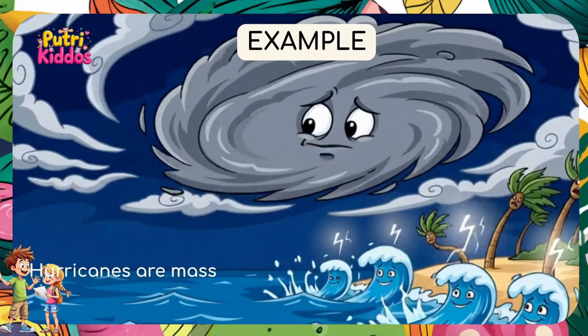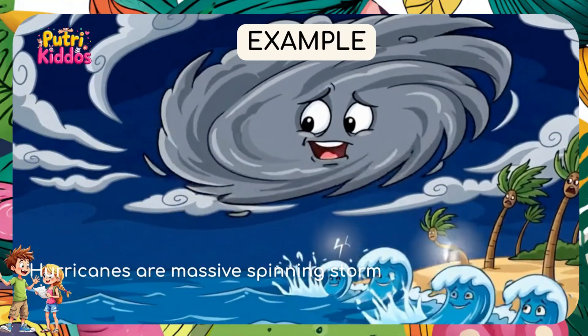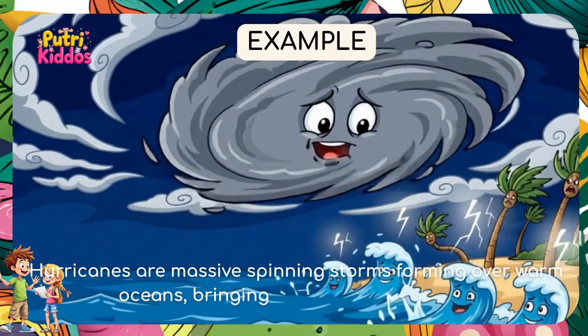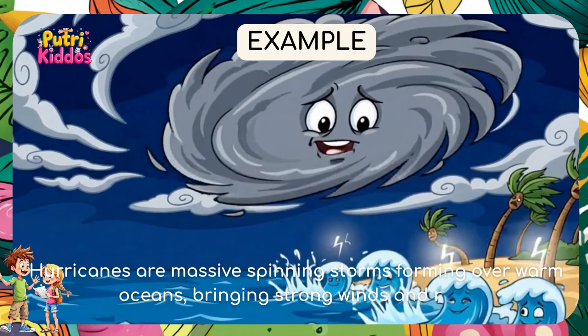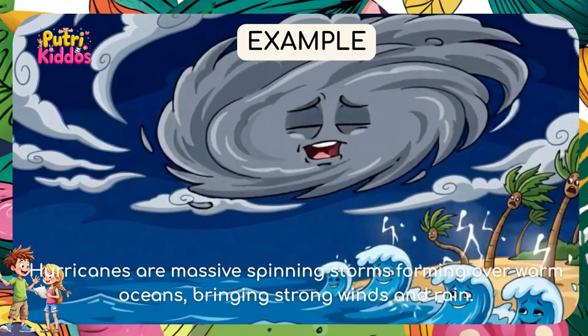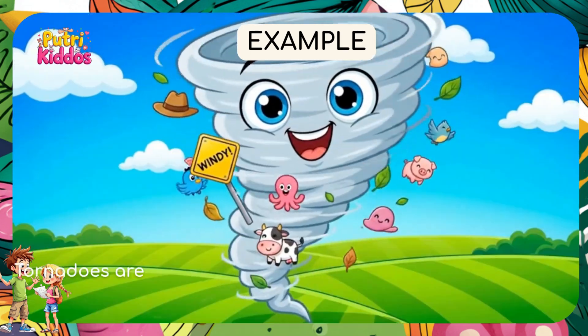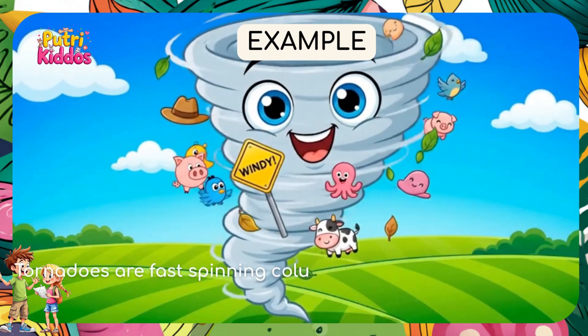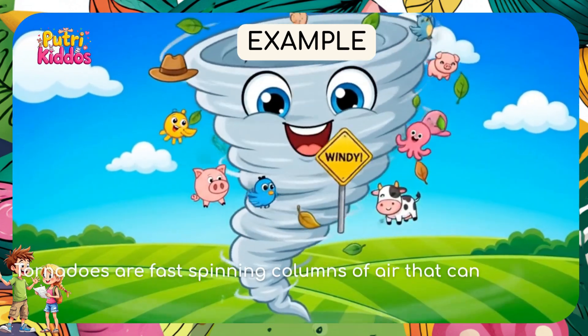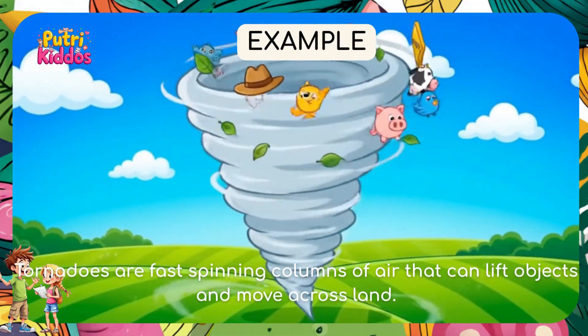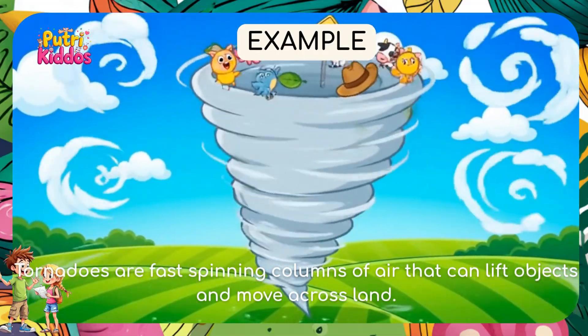Example 1: Hurricanes are massive spinning storms forming over warm oceans, bringing strong winds and rain. Example 2: Tornadoes are fast spinning columns of air that can lift objects and move across land.